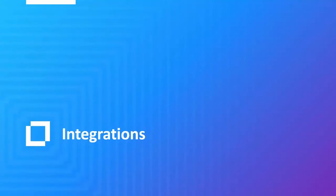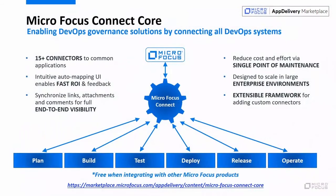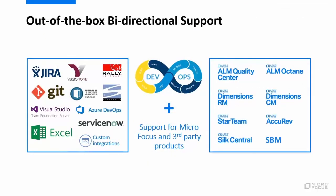Integrations are becoming a priority for a lot of our customers. With Micro Focus Connect Core, which can be downloaded from our marketplace and is free to use for ALM and Quality Center customers, you can easily integrate ALM with a variety of tools in your toolchain. ALM Connect comes with connectors to common third-party tools such as Jira, Version 1, Azure DevOps, ServiceNow, and others. Using MF Connect, you can easily integrate ALM with these tools to achieve traceability and visibility across multiple tools and parts of your organization.